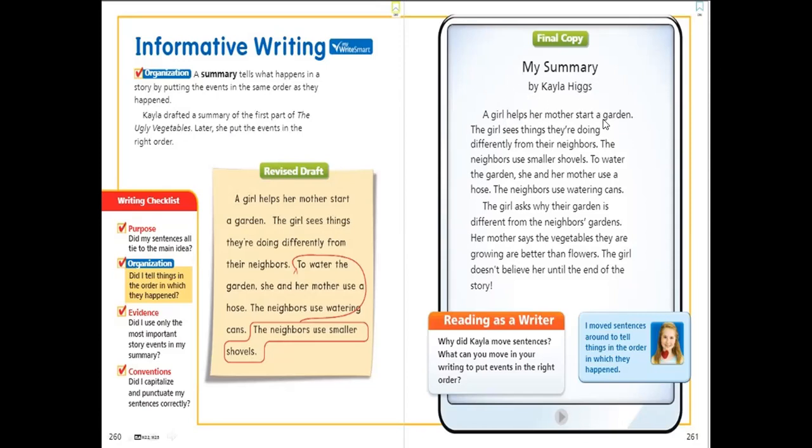Here we can see this sample. A girl helps her mother start a garden. The girl sees things they are doing differently from their neighbors. The neighbors use smaller shovels to water the garden. She and her mother use a hose. The neighbors use watering cans. The girl asks why their garden is different from the neighbor's gardens. Her mother says vegetables they are growing are better than flowers. The girl doesn't believe her until the end of the story. This is how we can summarize a story in the form of informative writing.